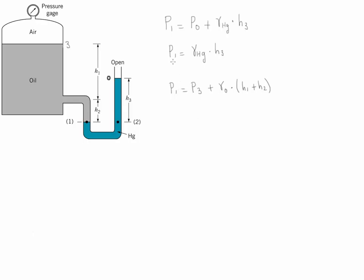We already know what the value of P1 is, so we're going to replace it over here. So it's going to be gamma Hg times H3, and we're going to solve for P3. So we're simply going to say minus gamma oil times H1 plus H2, and that is going to be equal to P3.